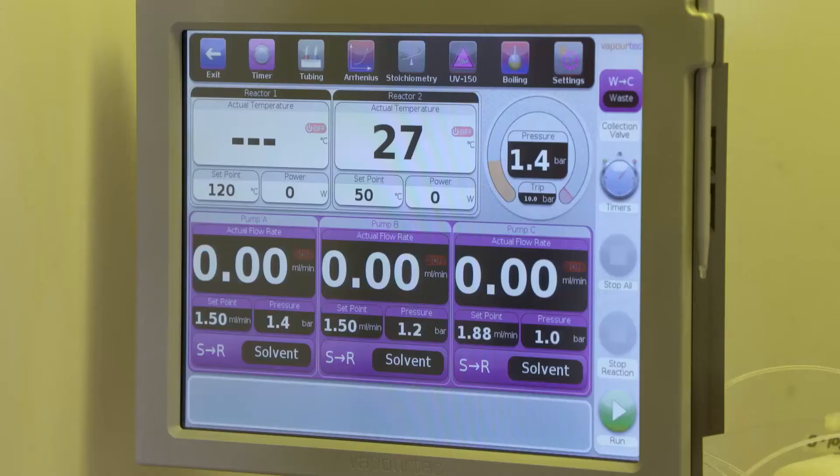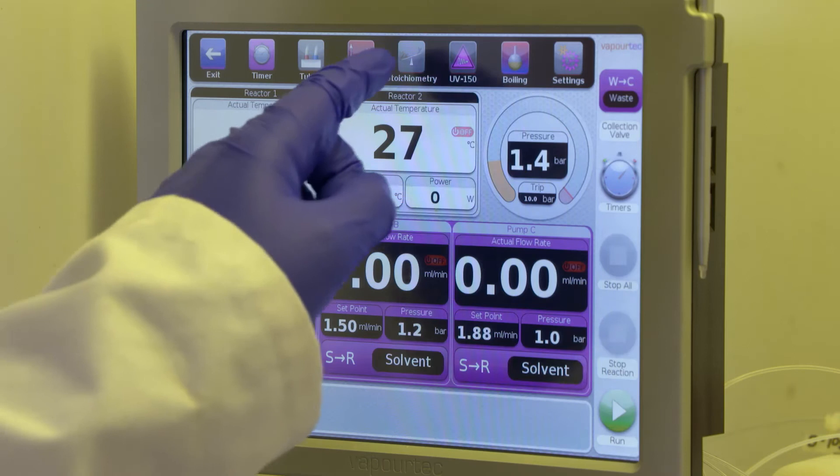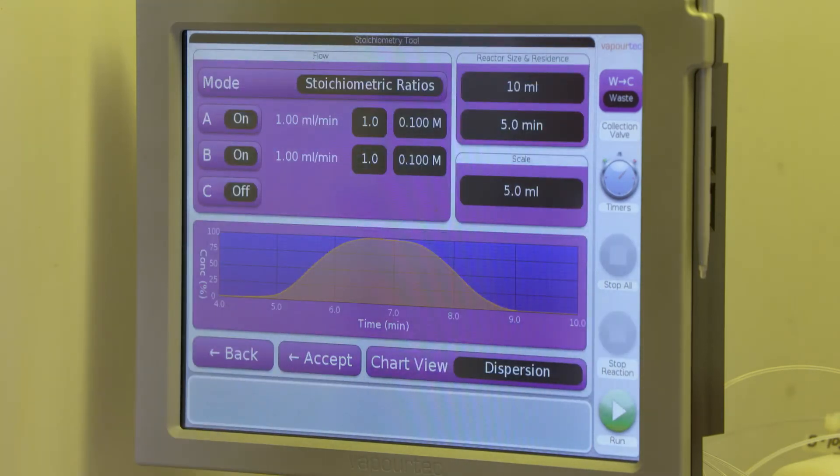So now that everything's ready we can use the software to design and control the reaction. The control software has the stoichiometry tool which includes dispersion modeling which you can use to make sure that you're pumping in enough material to reach the steady state.